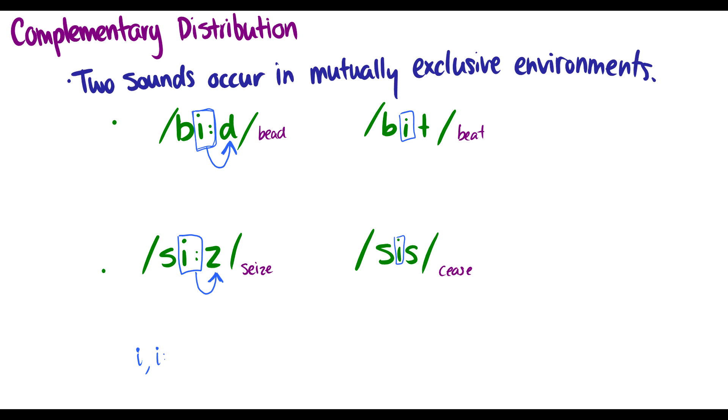However they don't appear in the same environment. They appear in mutually exclusive environments which means they will never overlap. So we'll never see this short e before a voiced d at least in western Canadian English. This may vary depending on where you are. This is purely an example of western Canadian English. Okay so that's complementary distribution.